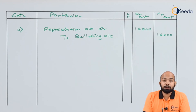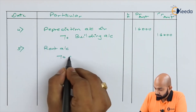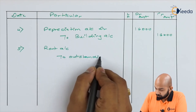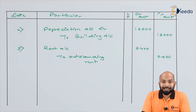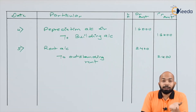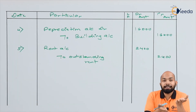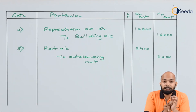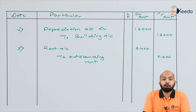The fifth transaction — rent unpaid rupees 2,400. Any outstanding amount has to be added to that expense again. If you are increasing expenses, that specific expense is debited. So rent account is debited and outstanding rent is credited for the amount of 2,400.